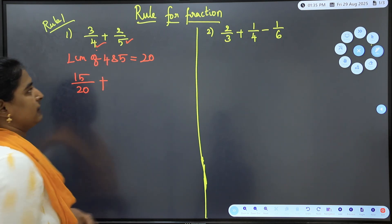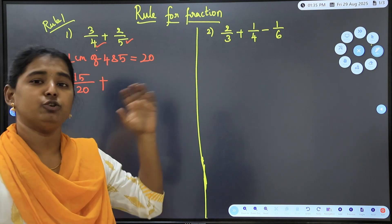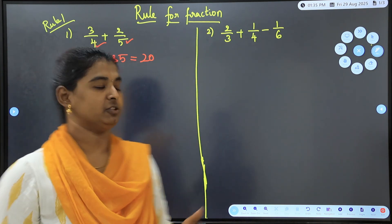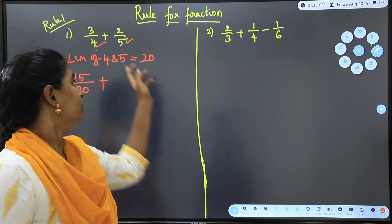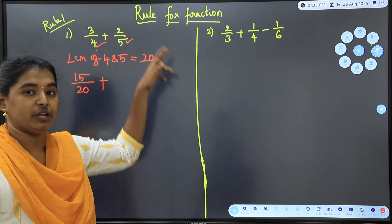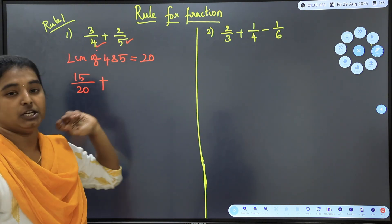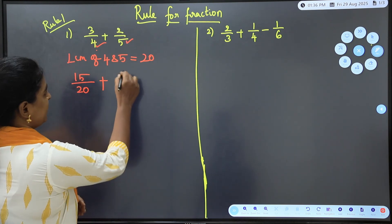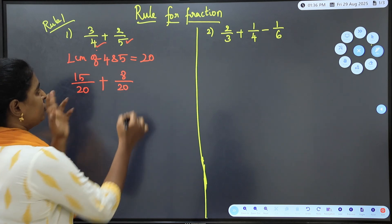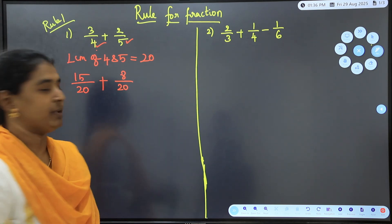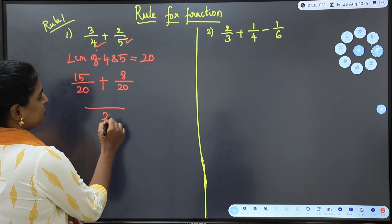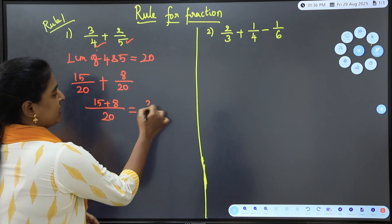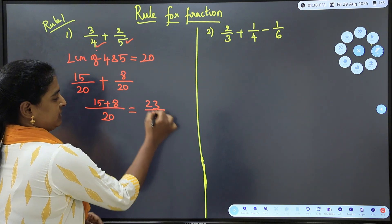The sign between them is plus. Now the common denominator is 20, so we add the numerators: 15 plus 8 equals 23. The answer is 23/20.